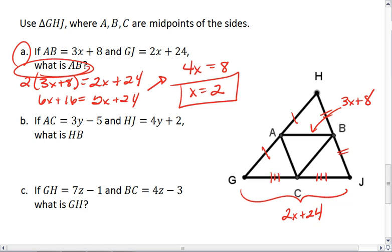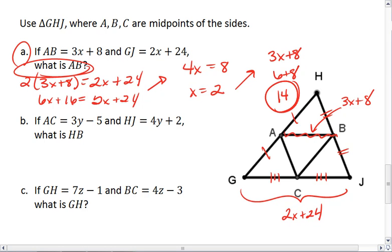But we want to know the length of AB, which is the mid-segment. We plug 2 back in. We find that 3X plus 8 will become 6 plus 8, which becomes 14. That is our final answer.